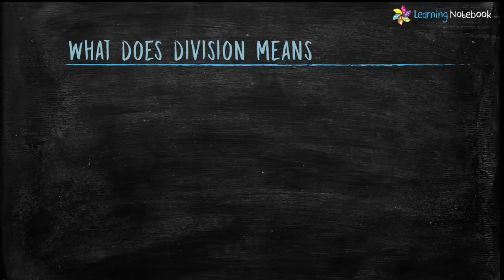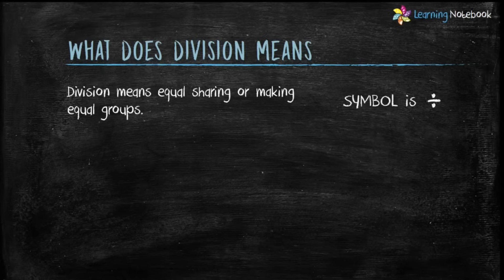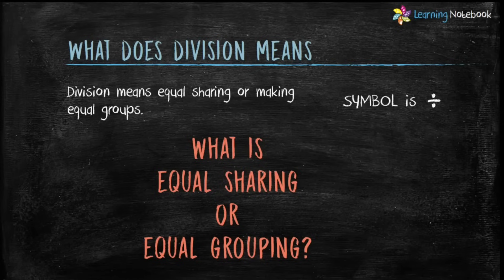Let's understand what division means. Division means equal sharing or making equal groups, and its symbol is as displayed. But what is equal sharing or equal grouping?